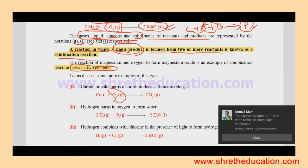Carbon or coke burns in air to produce carbon dioxide gas. This is a combination reaction. Carbon is an element in solid state, oxygen is gas in gas state, and carbon dioxide CO2 is formed. This is between two elements.